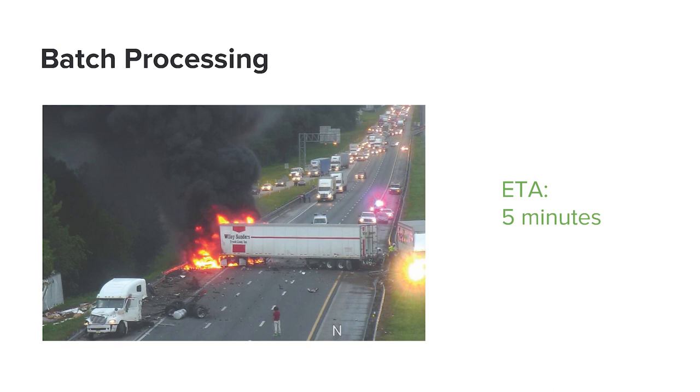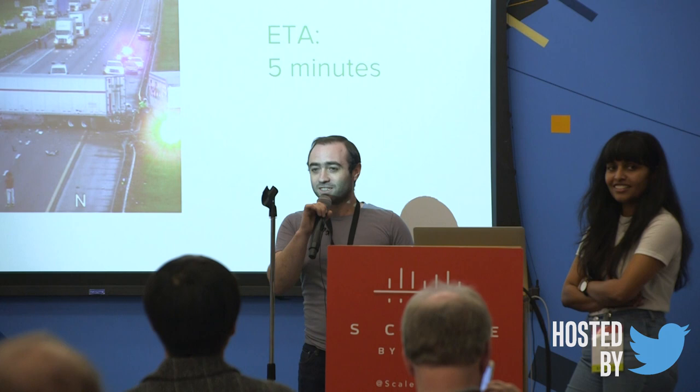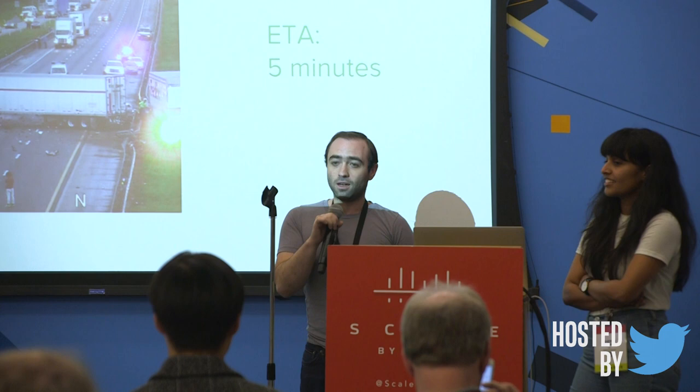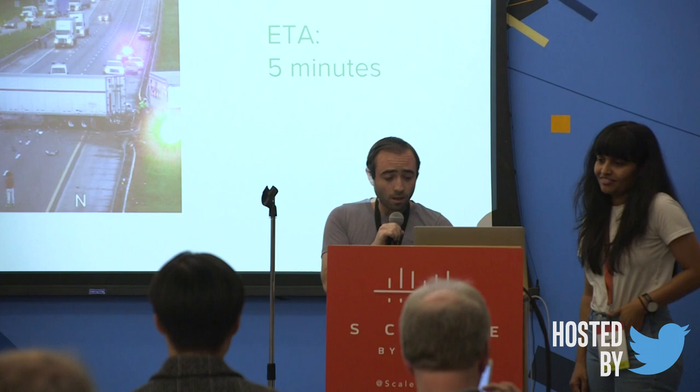But for a lot of use cases like ours, batch processing is just too slow. If there's an accident on the highway and it takes us a day to learn about it and update our ETA systems, that's just too slow. We can't tell a user their car is coming in five minutes when there's a giant flaming truck on the highway. So Lyft realized about a year ago that we needed to be faster in a lot of the things we do, and we started turning to stream processing.